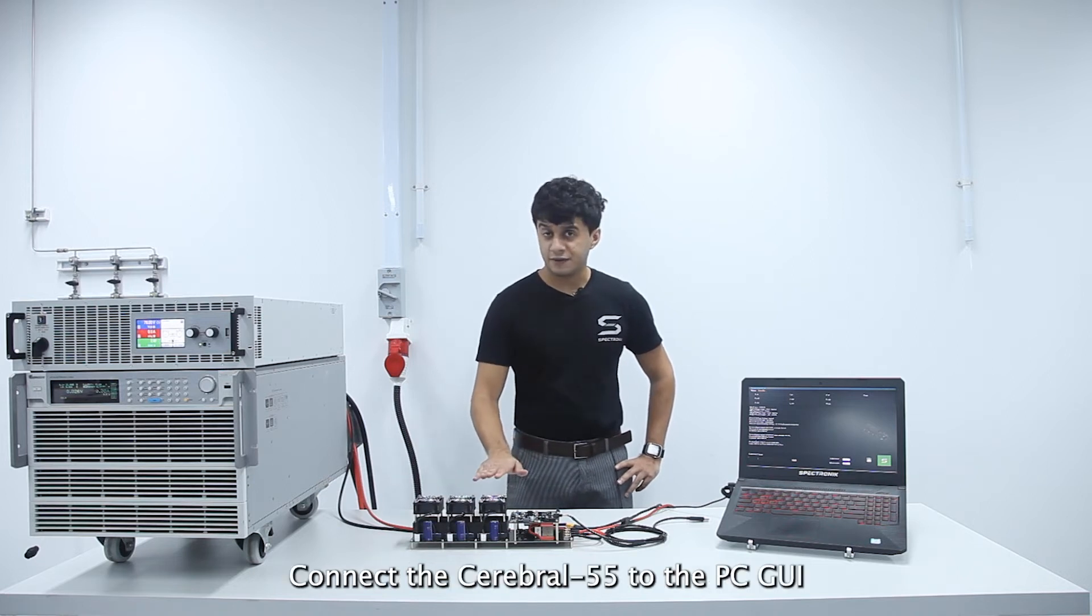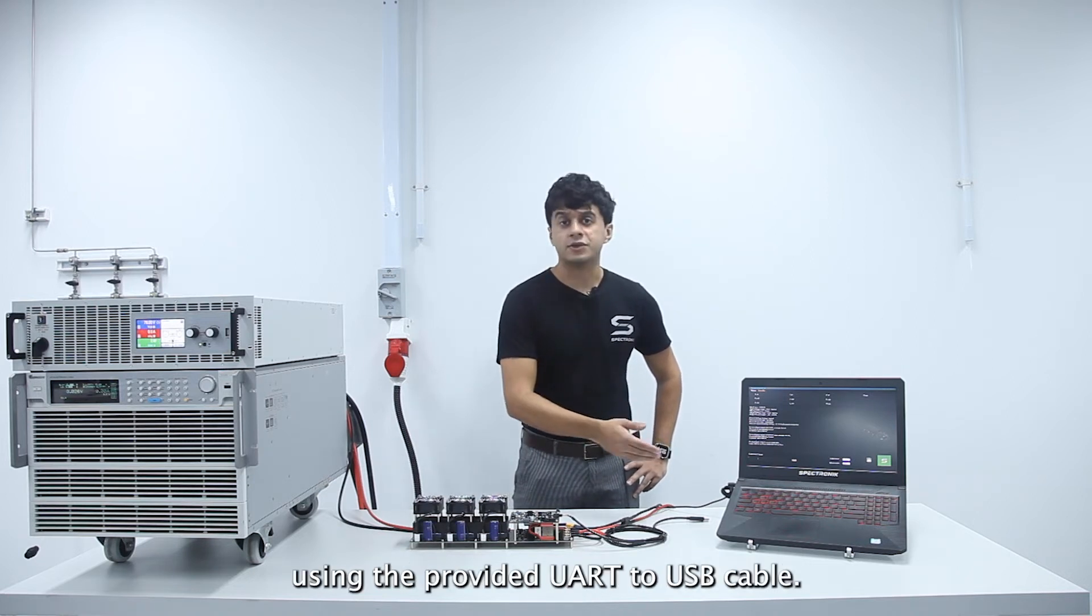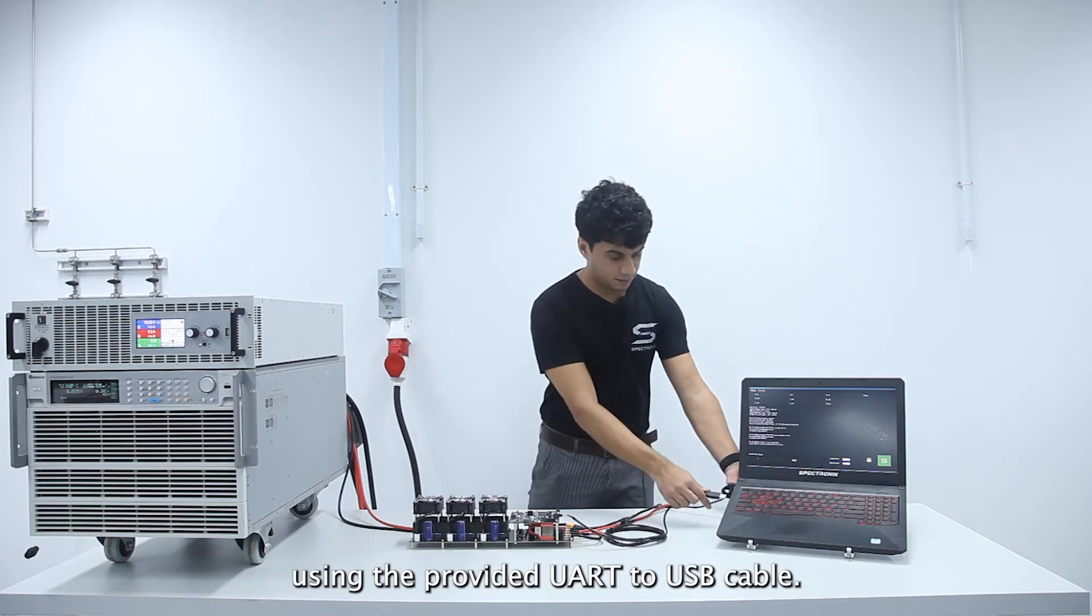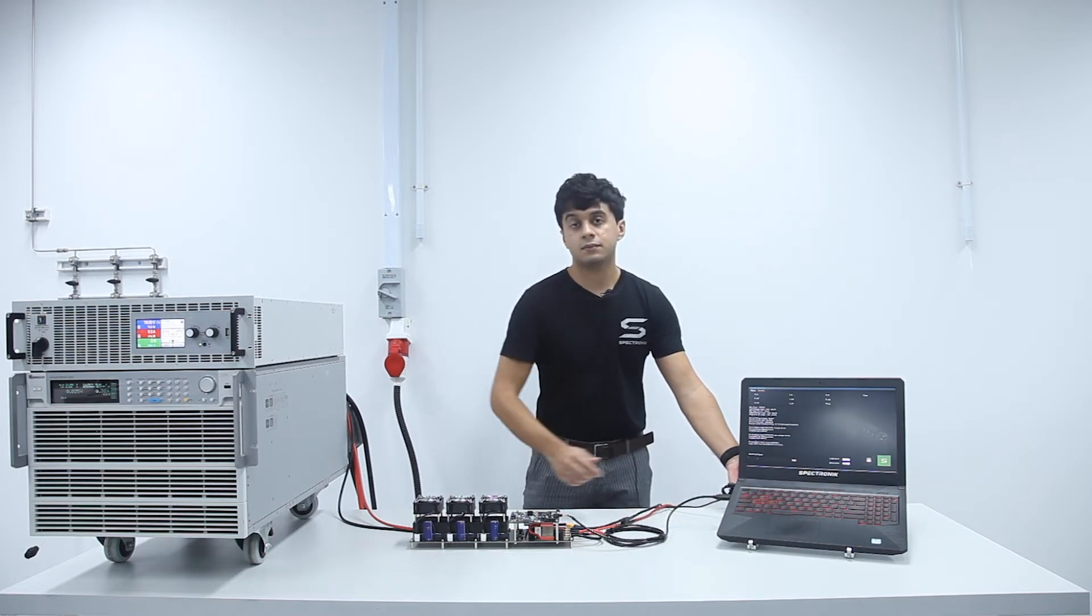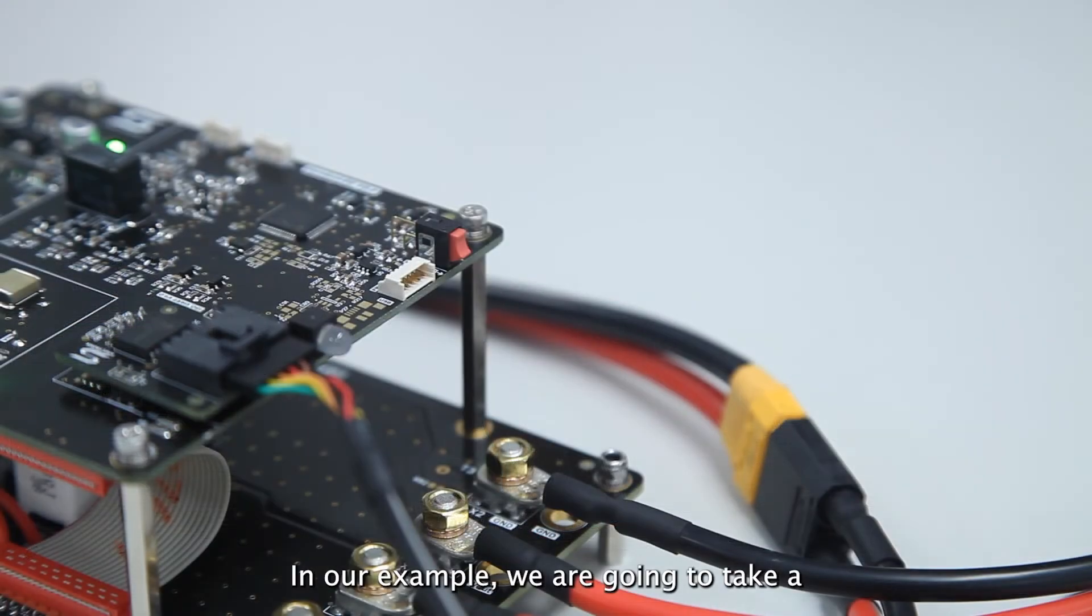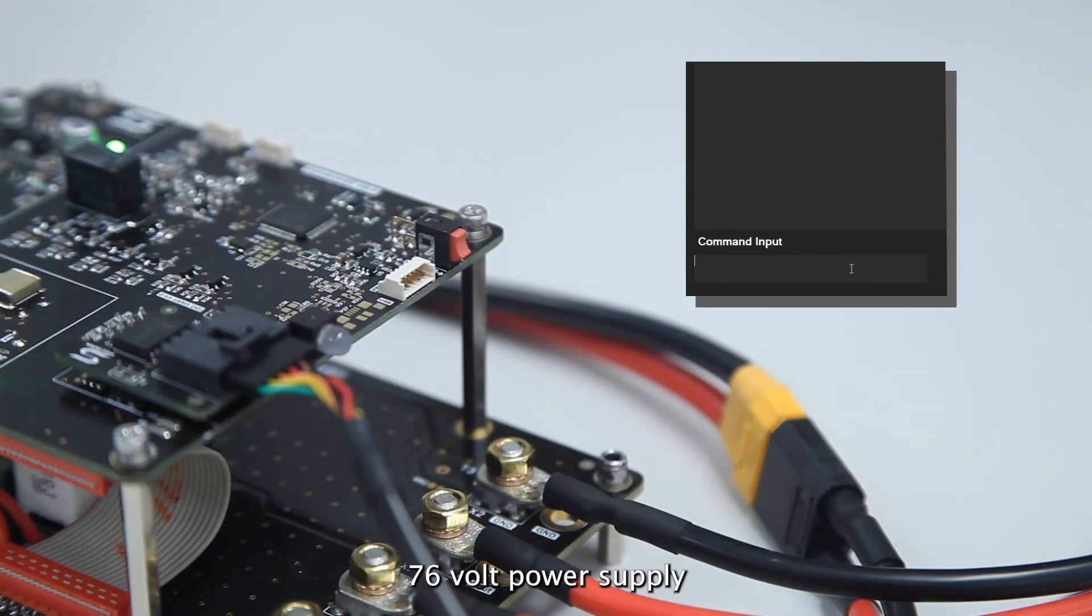Connect the Cerebro 55 to the PC GUI using the provided UART to USB cable. In our example, we are going to take a 76V power supply and step it up to 90V.